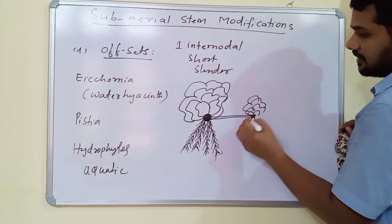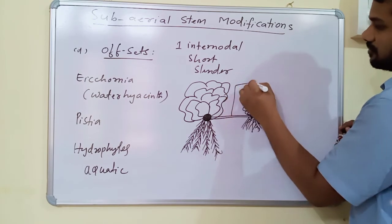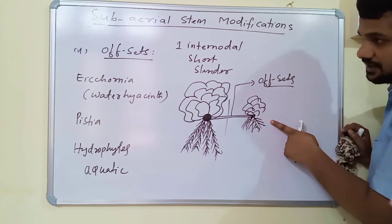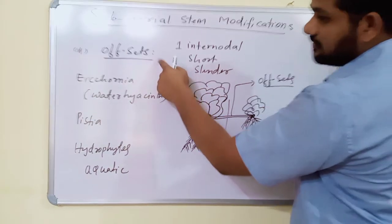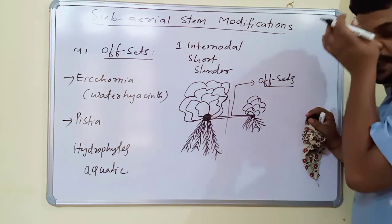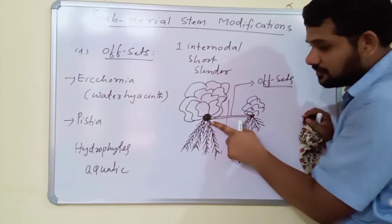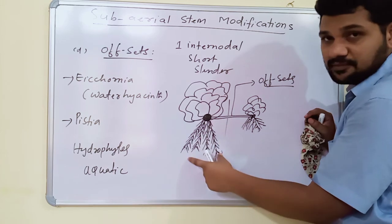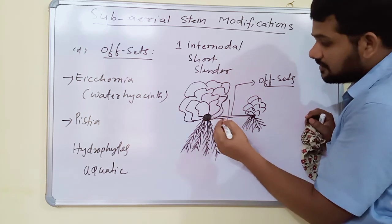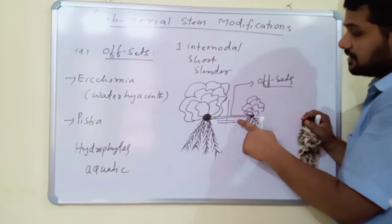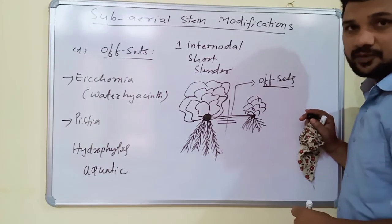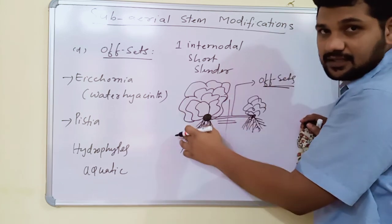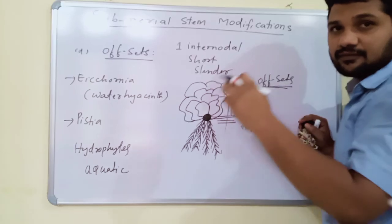Offsets may break off and take part in vegetative propagation. These short, slender branches are called offsets and are found in plants like Eichhornia and Pistia. In this modification, the stem is highly reduced to a disc, above which there is a rosette of leaves, and below which there are many adventitious roots. The axillary bud produces a short, slender branch called an offset, which takes part in vegetative propagation. These are the four important types of sub-aerial stem modifications, and all of them take part in vegetative propagation.